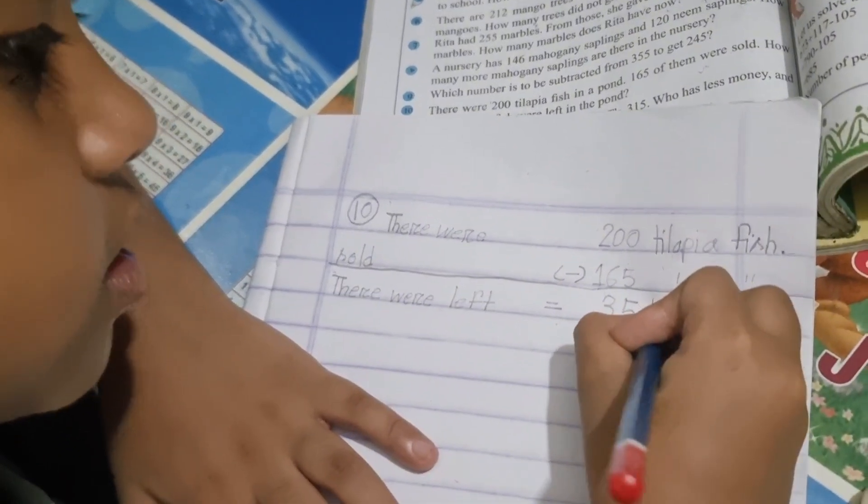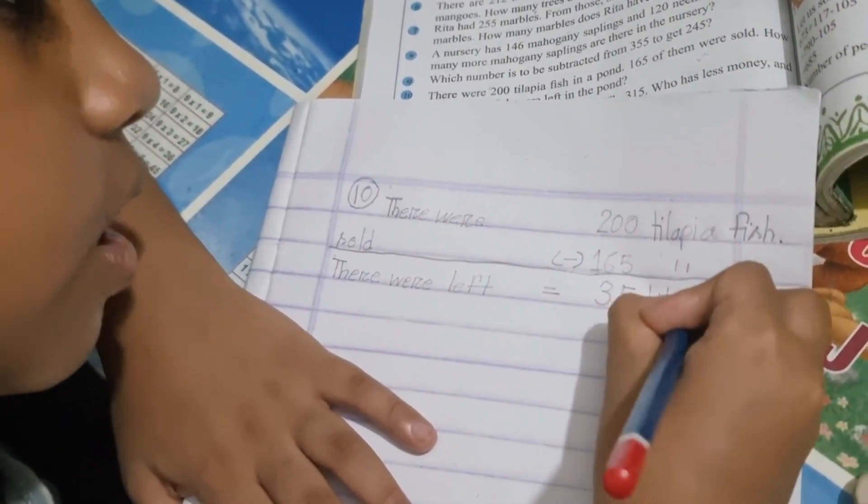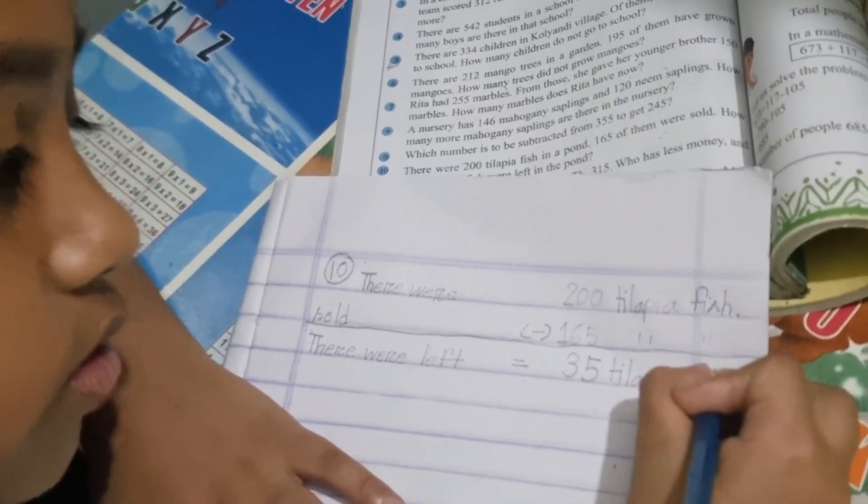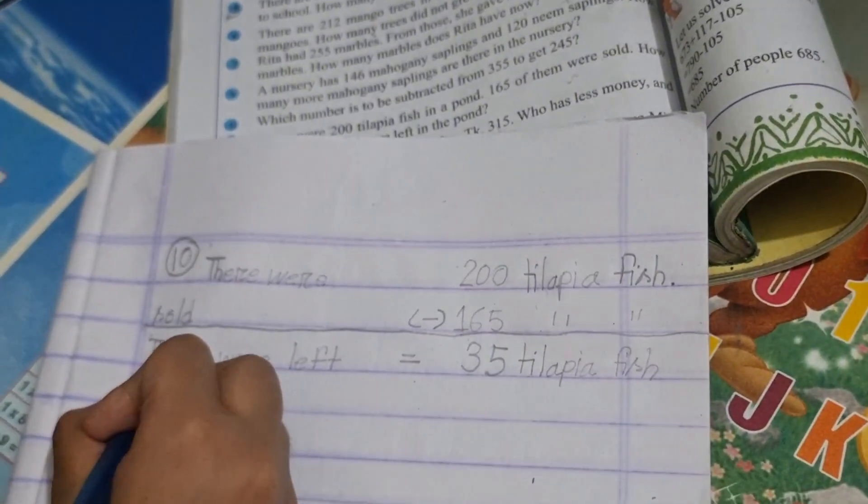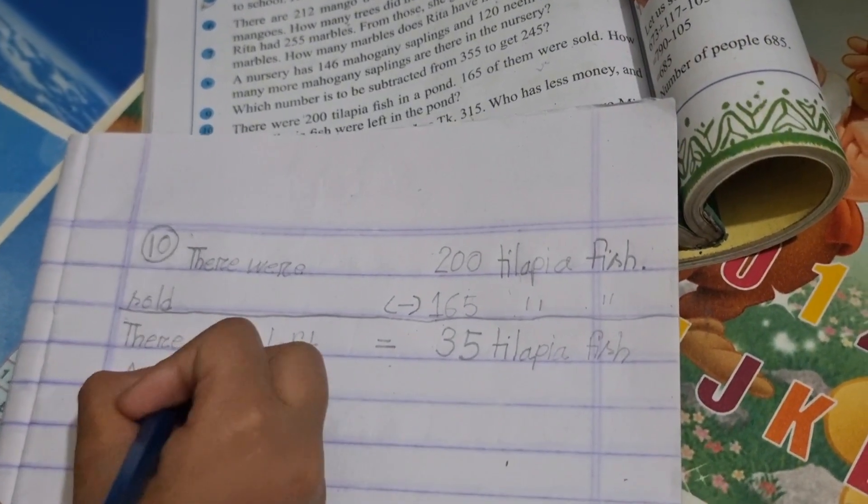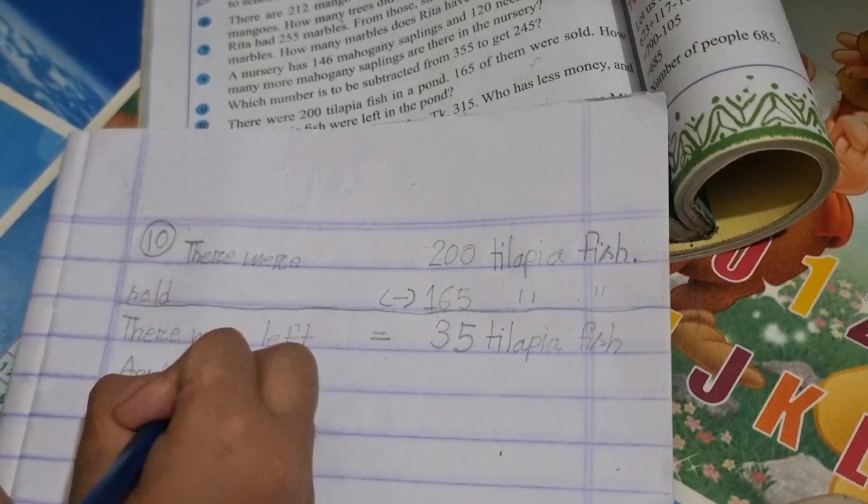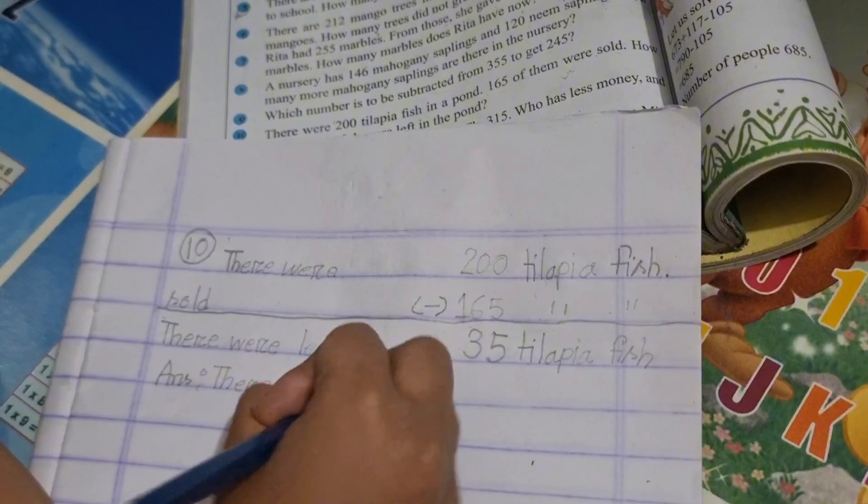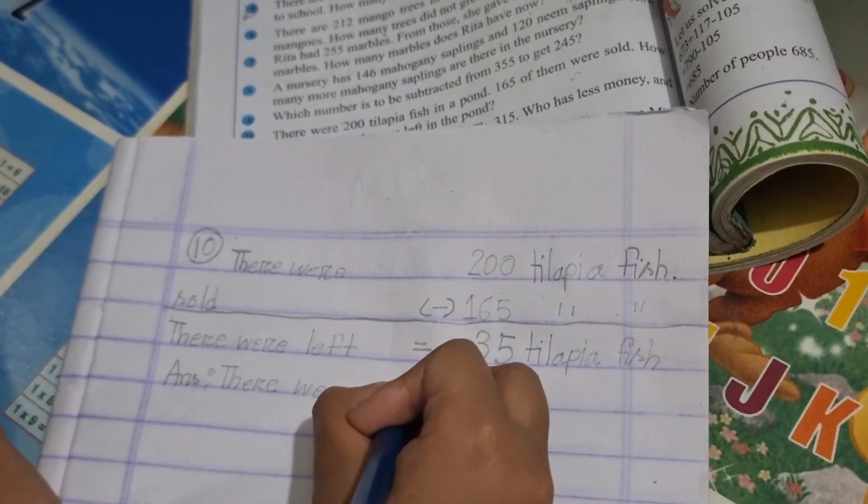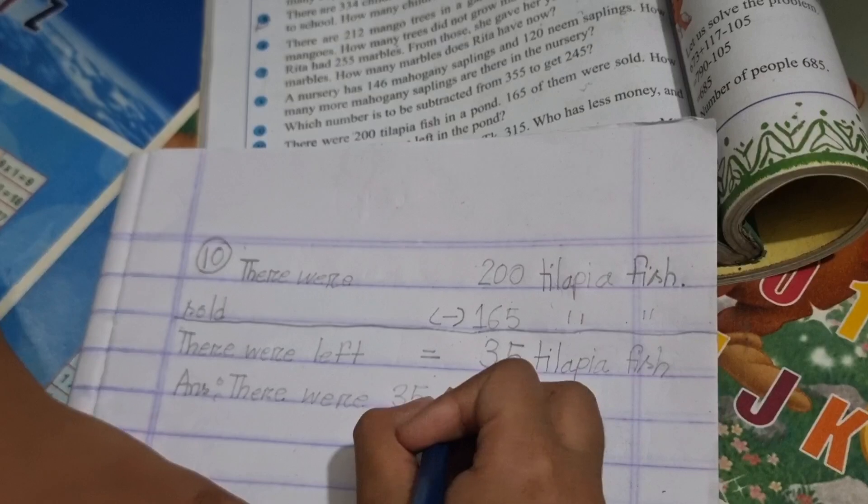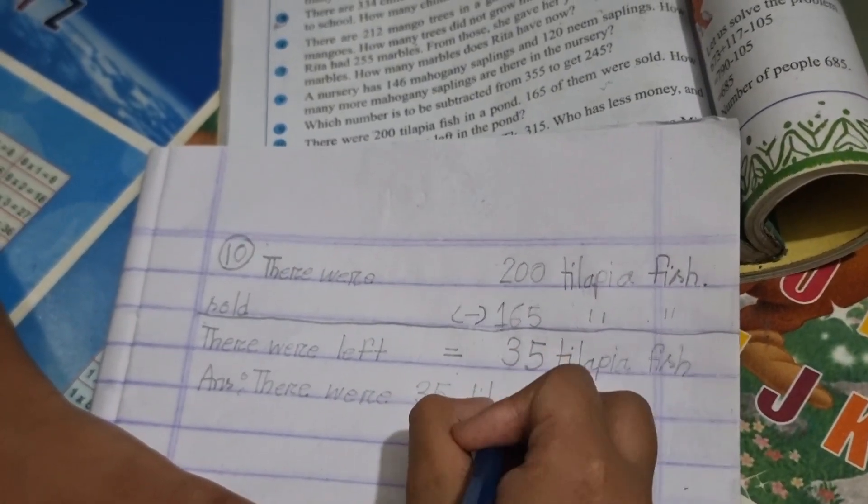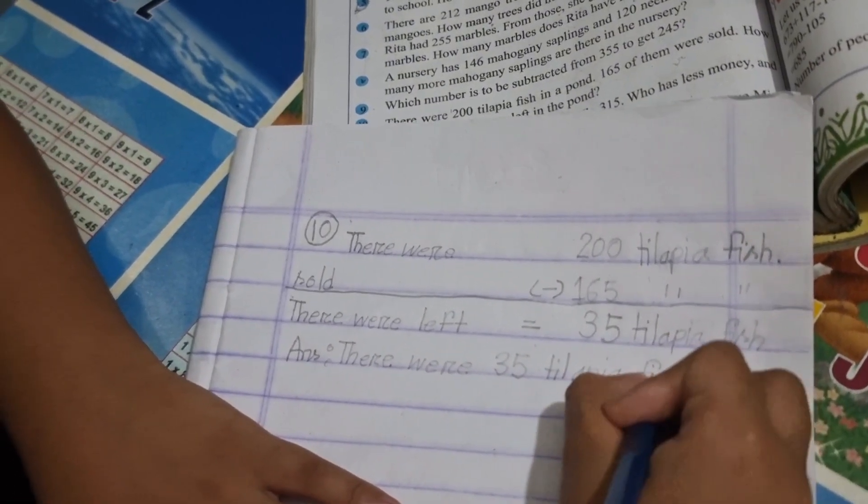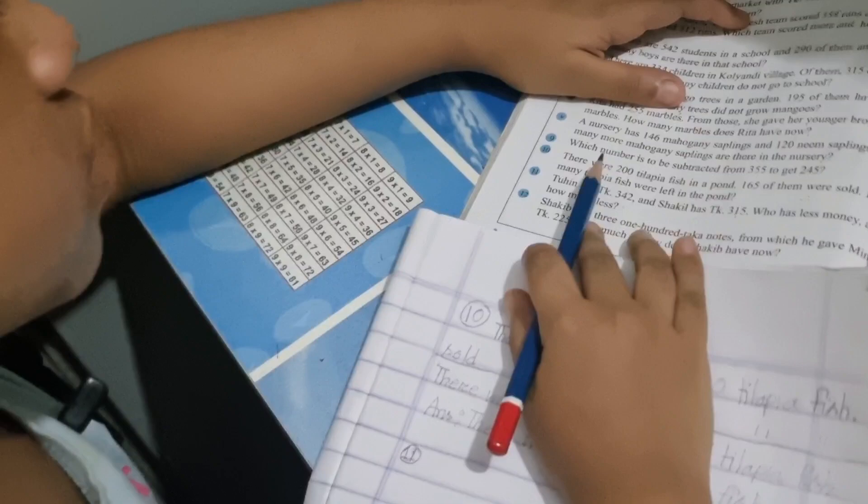We can't put 0 here. So the answer is 35 tilapia fish.